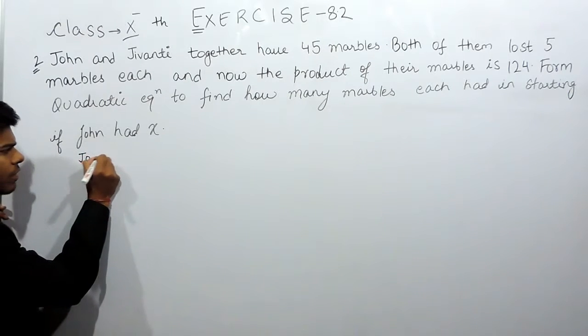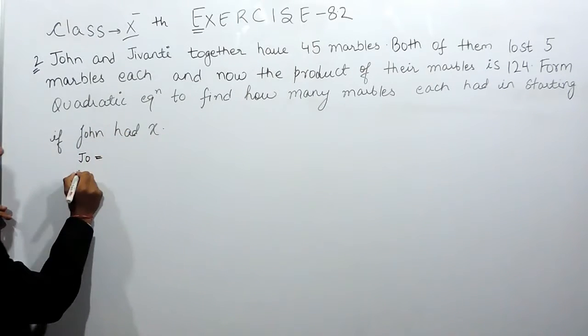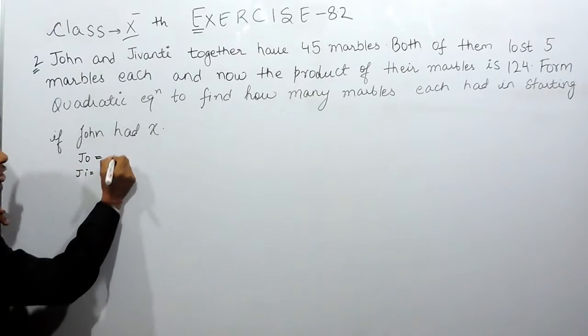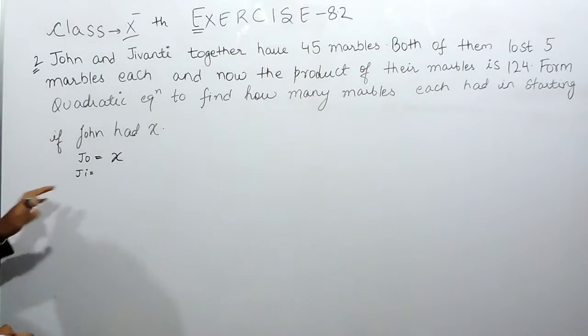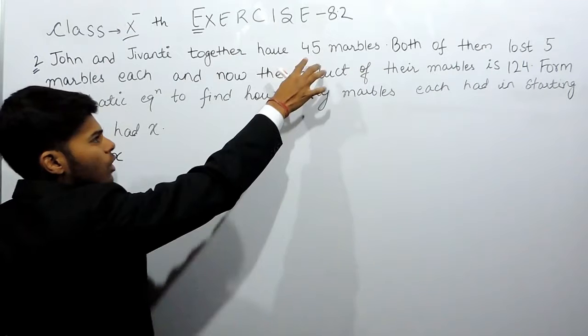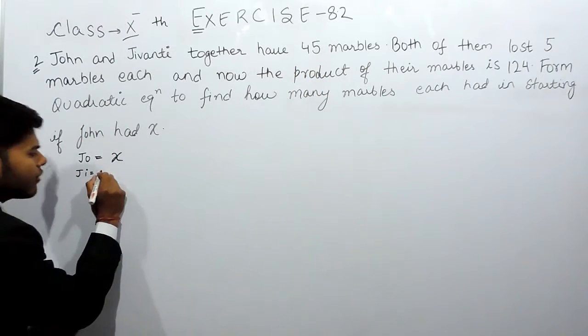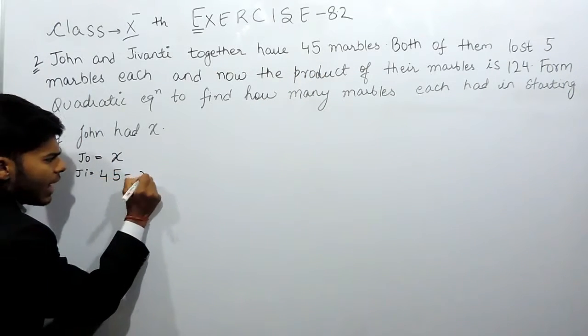Jo for John and Ji for Jivanti. John had x marbles. Now the total were 45 so Jivanti will have 45 minus x marbles.